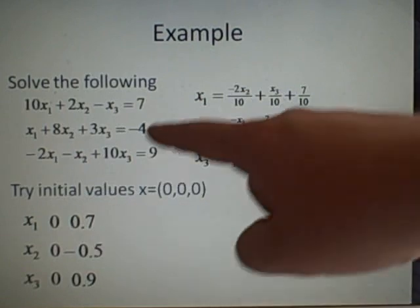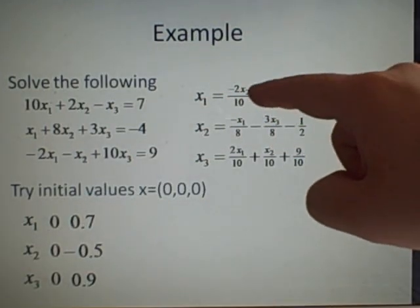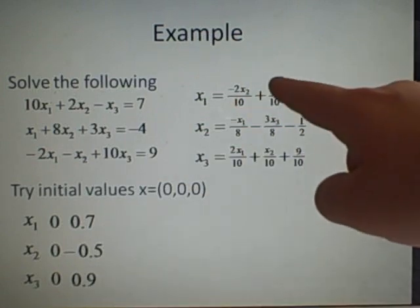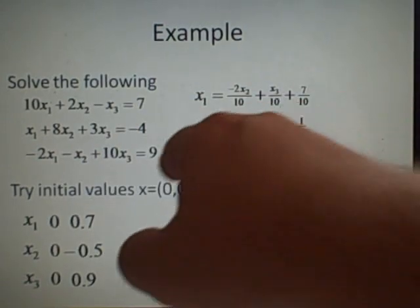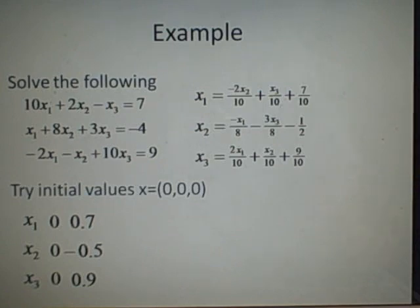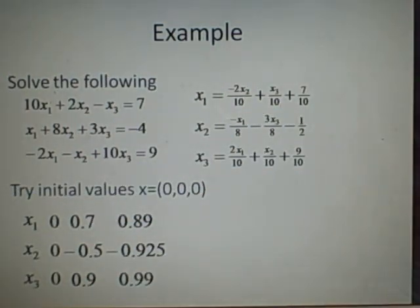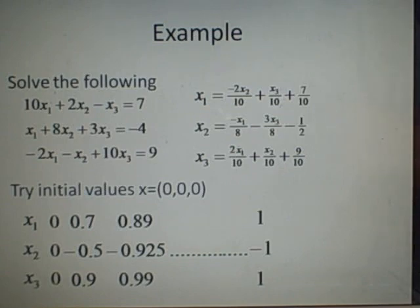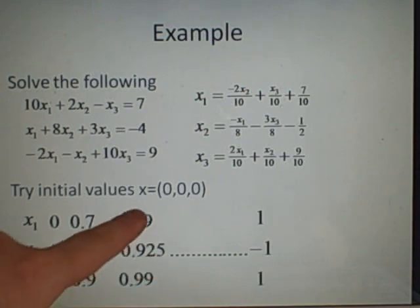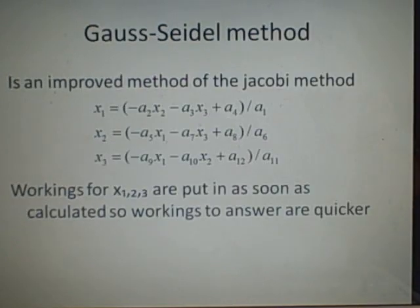Next, we use those values and substitute them back in. For x1, putting in x2 and x3 gives 1 over 10 plus 0.9 over 3, plus 7 over 10, giving a new value for x1. We do exactly the same for x2 and x3 to get new values. You keep carrying on this process until the values start to converge. You can already see they're converging to 1, minus 1, 1. So x1 equals 1, x2 equals minus 1, and x3 equals 1.